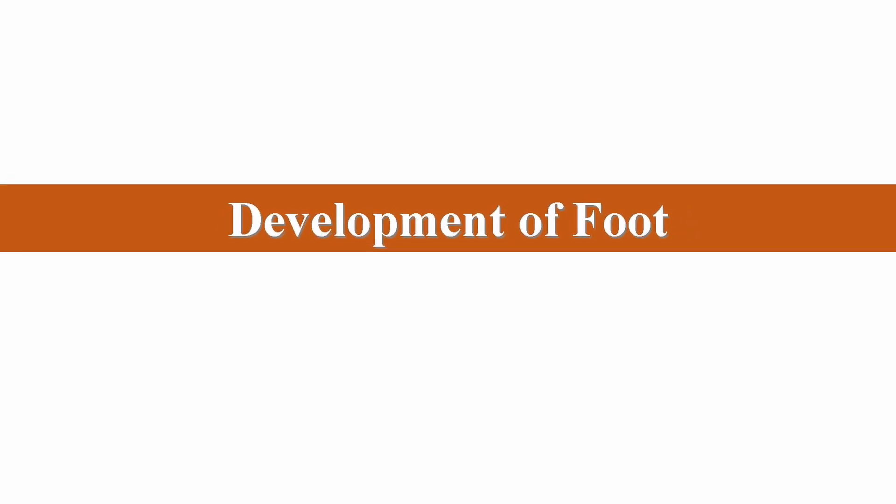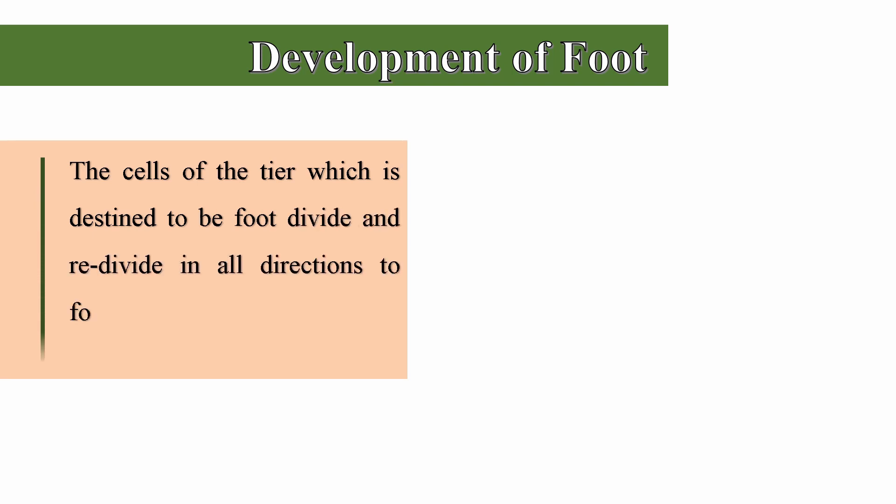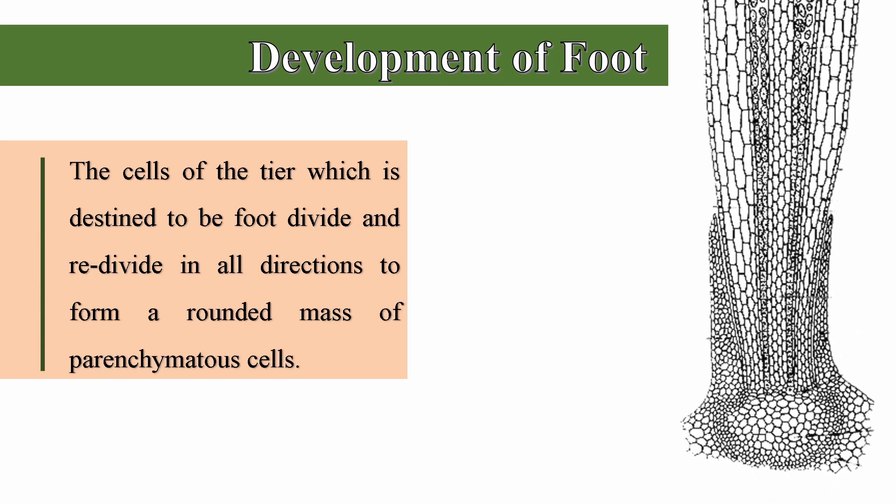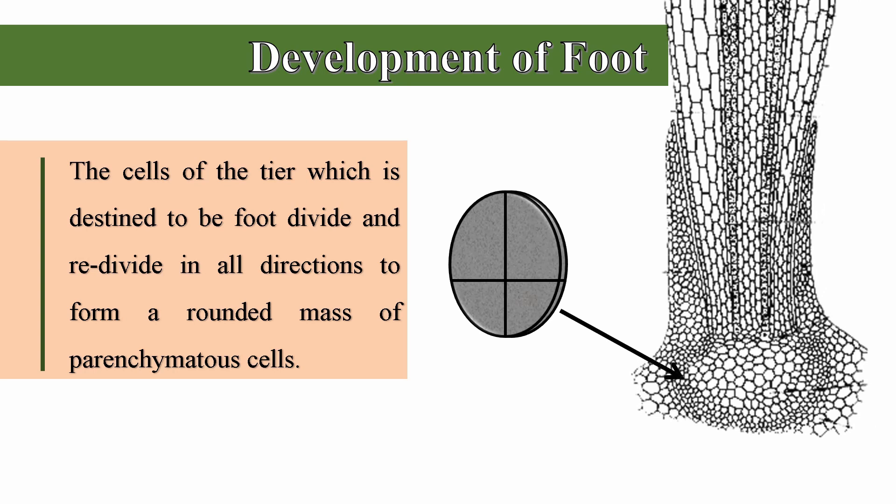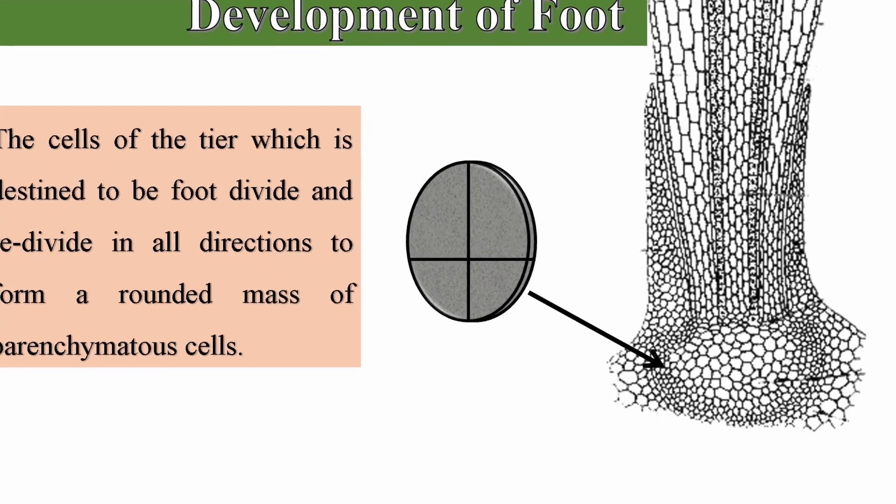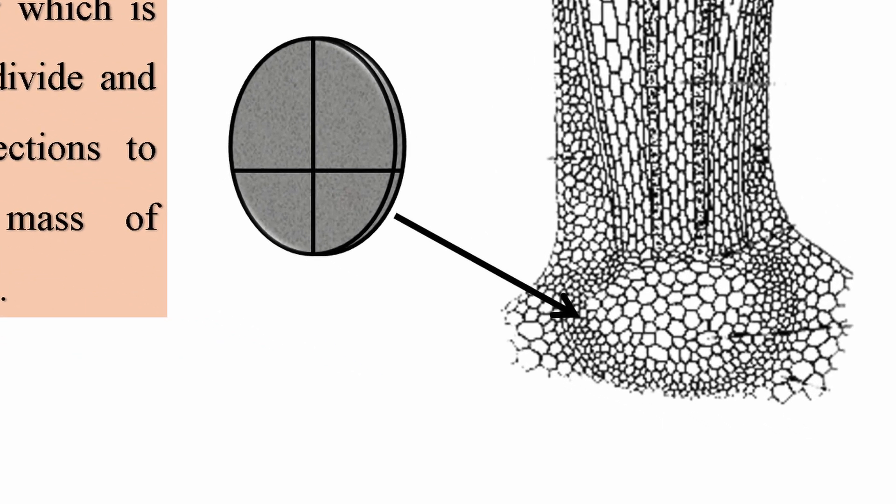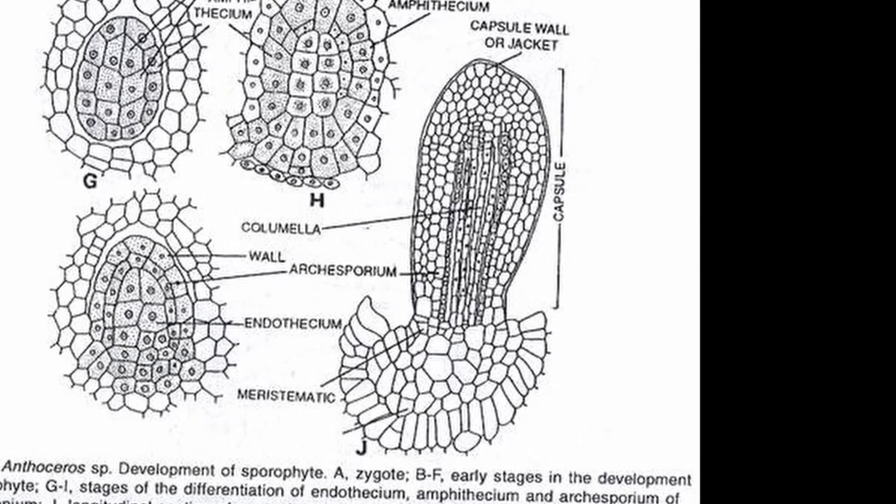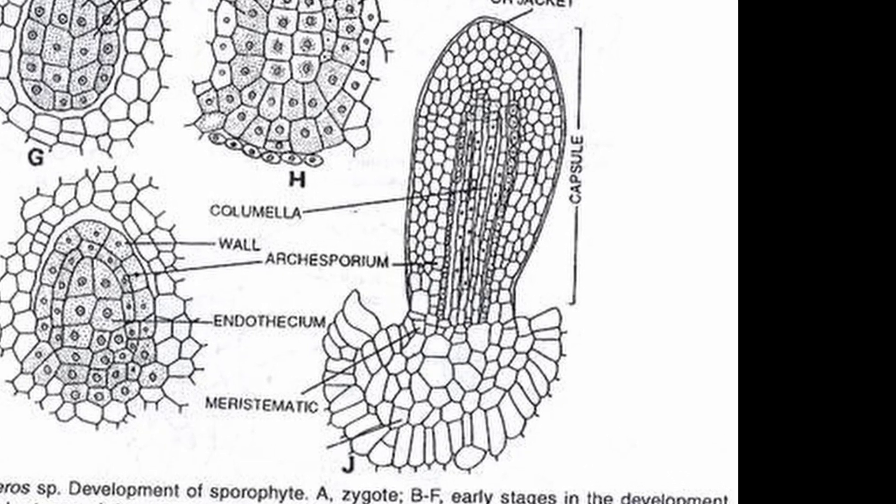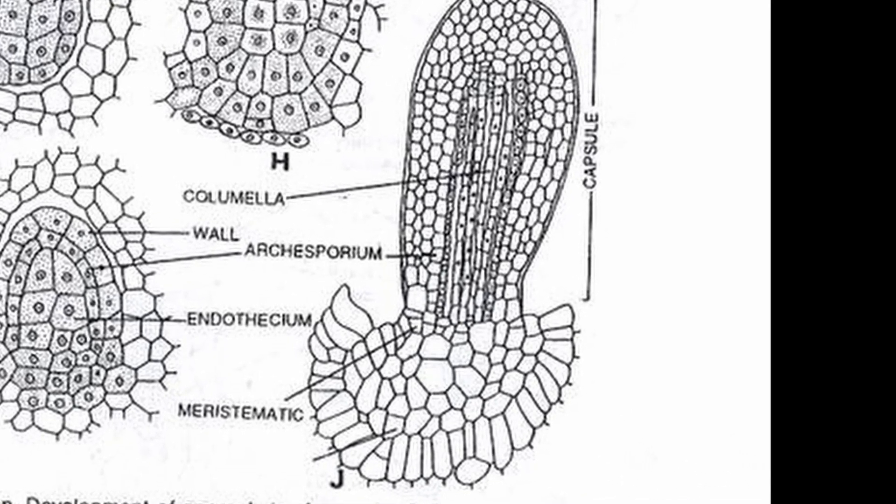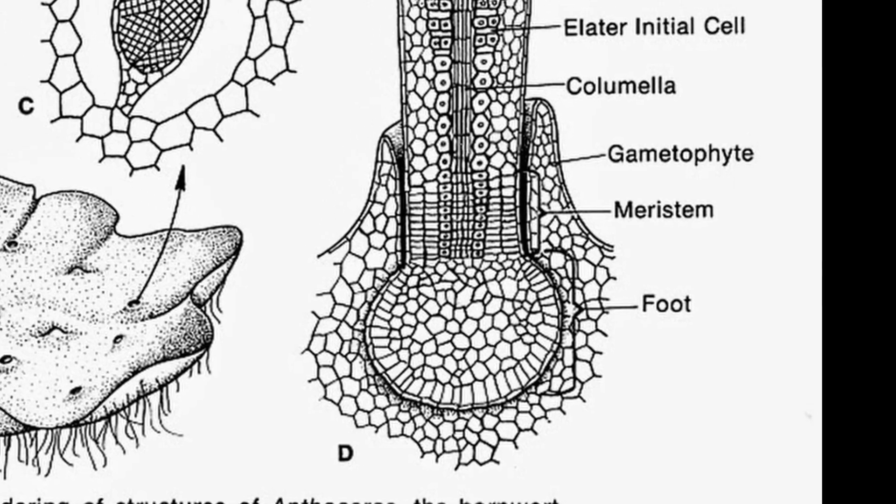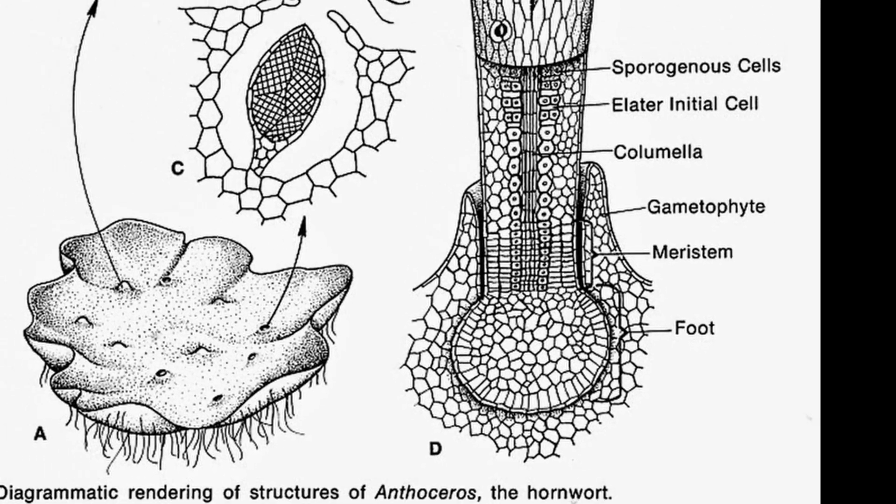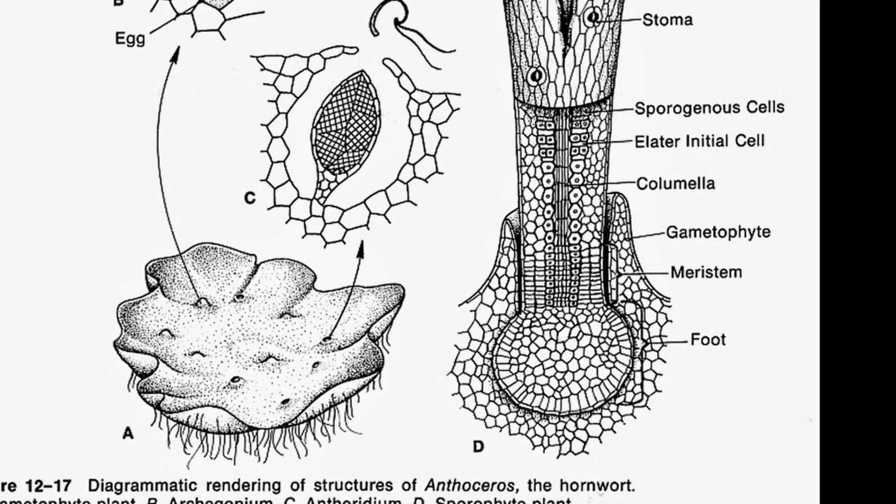Now, let us discuss the development of foot. The cells of the tier which is destined to be foot divide and re-divide in all directions to form a rounded mass of parenchymatous cells. The foot is broad, massive and like an inverted cap. The peripheral cells of the foot in some species grow out into certain tubular rhizoid-like processes which penetrate the tissue of the gametophyte. They are haustorial in function which help to absorb the nutrient from the gametophyte.